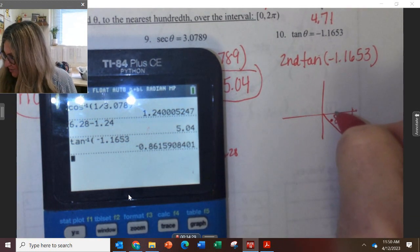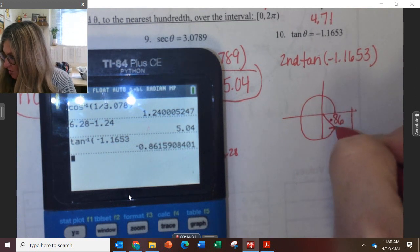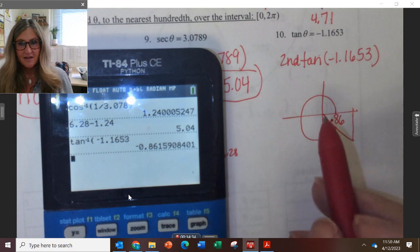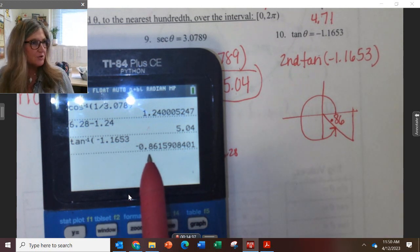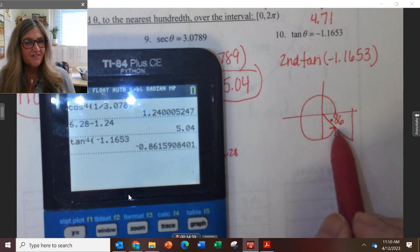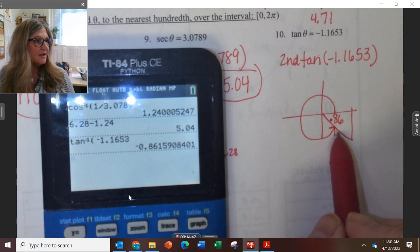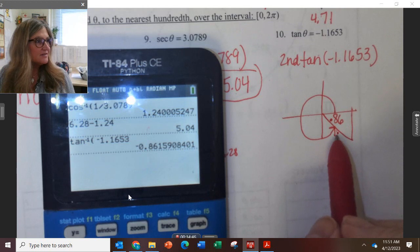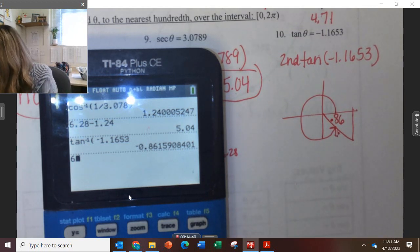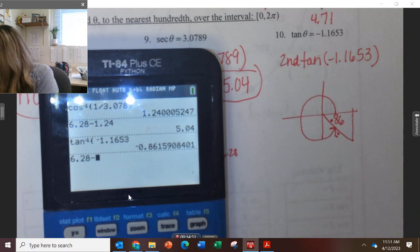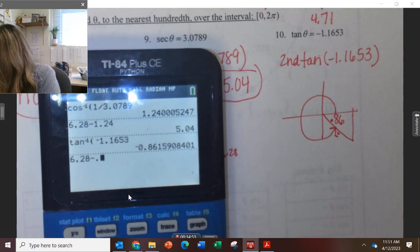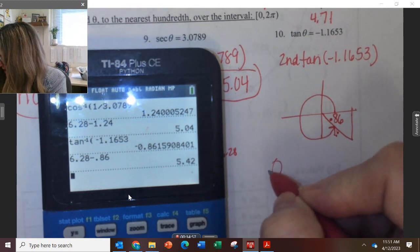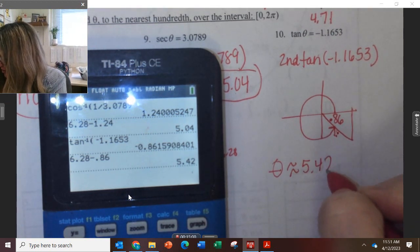But that is not going to be the correct answer because we have to have all of our answers between 0 and 2 pi. This answer is not in between 0 and 2 pi. So how am I going to find it? Subtract it from 6.28. So I can do 6.28 minus that reference angle of 0.86, and so one of my angles is going to be about 5.42.